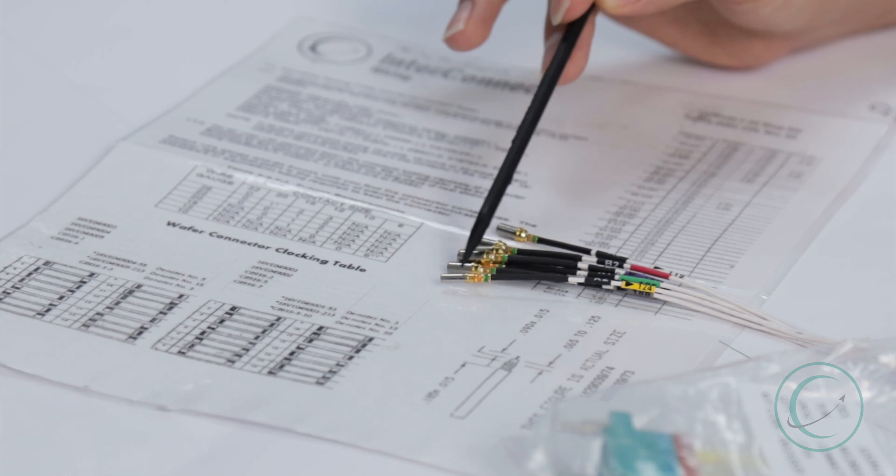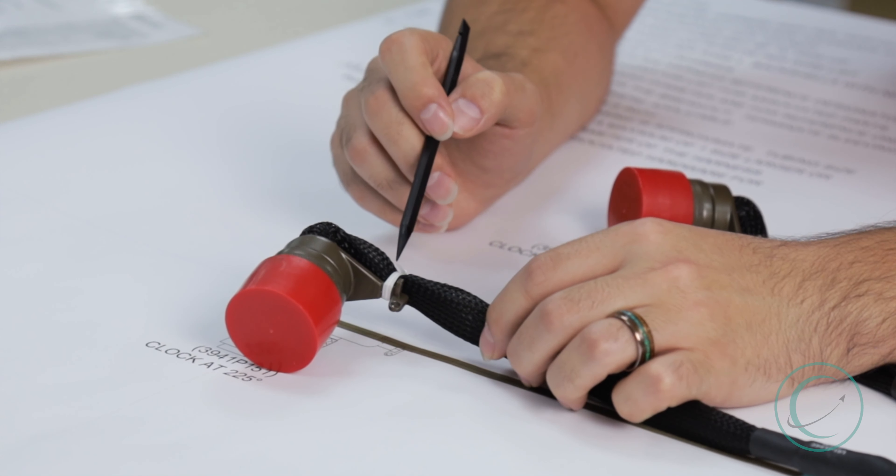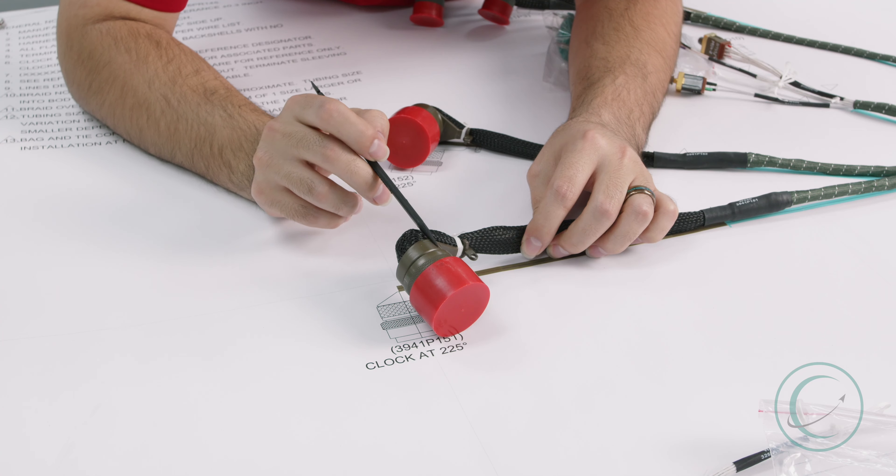Again, this is done to prevent damage to the grommet when plugging in a connector and pulling out, so that way it has a good seal. And for our next example we'll be talking about string tying a water faucet back shell.